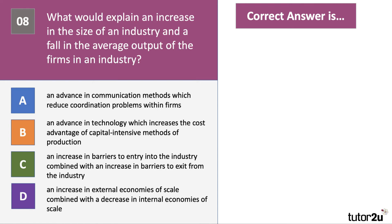Here's our last question — some of you may be on the cusp of getting eight out of eight. What would explain an increase in the size of an industry and a fall in the average output of firms in the industry? There's a lot of text to read, so take your time, press the pause button and have a go at question number eight.